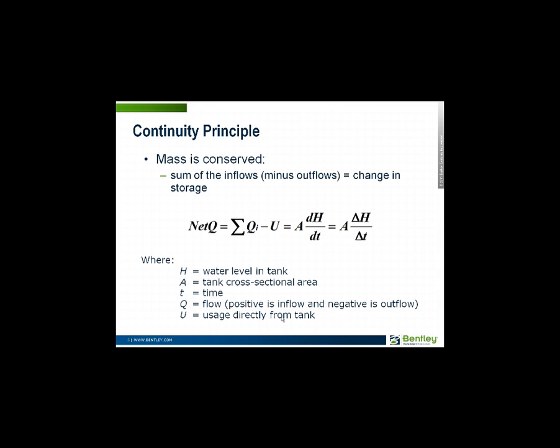It says mass is conserved. At any point in the system, the mass of water going into that point equals the mass going out. The sum of those QI terms that you see represent the pipes going into a point on the system. U would be the water that gets used up at that point in the system, water consumers. And in steady conditions, that's equal to zero. The sum of the flow in equals the sum of the flow out.